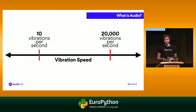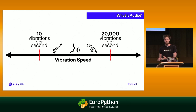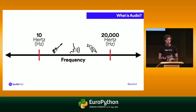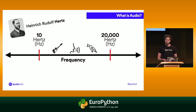Higher pitches mean higher vibrations per second, or technically higher frequencies. These frequencies are measured in a unit called Hertz, often notated as Hz. They're called Hertz because — no, it's actually named after this German physicist Heinrich Rudolf Hertz. That's how sound works at a basic level.